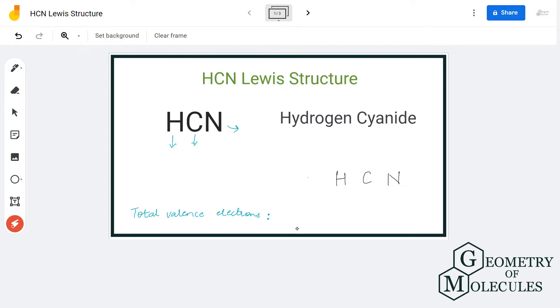So HCN is a chemical formula for hydrogen cyanide and it is made of three atoms: hydrogen, nitrogen, and carbon.